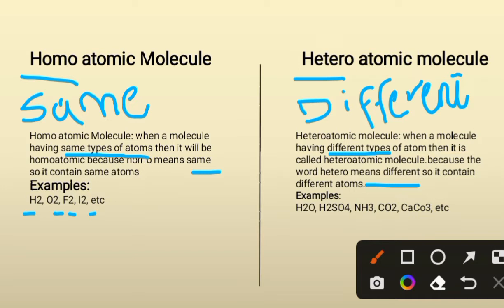Now moving to heteroatomic molecules, some examples are H₂O, H₂SO₄, NH₃, CO₂, and CaCO₃. These are made up of different types of atoms, which is why they are called heteroatomic molecules. For example, H₂O is made up of two hydrogen atoms plus one oxygen atom, and H₂SO₄ (sulfuric acid) is made up of two hydrogen, one sulfur, and four oxygen atoms.